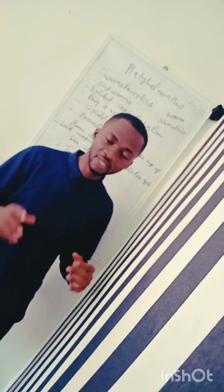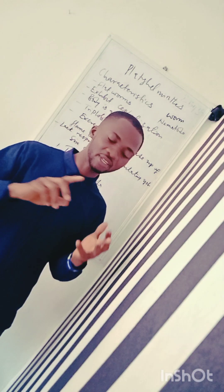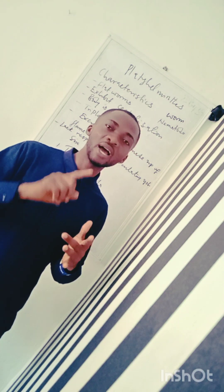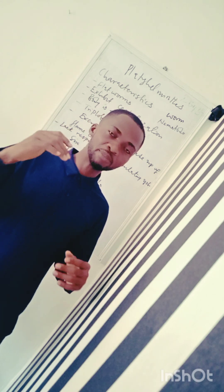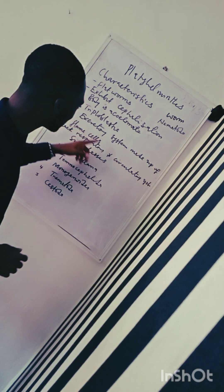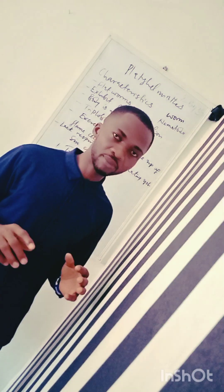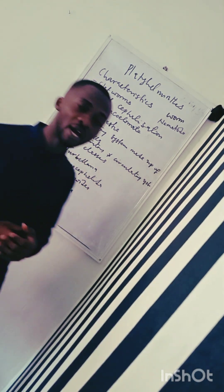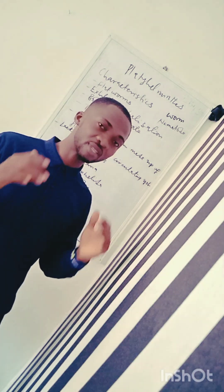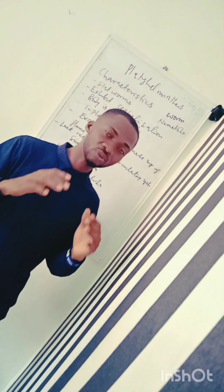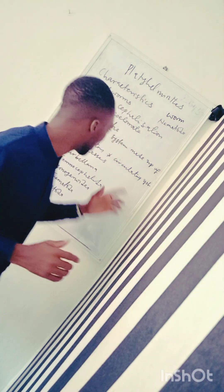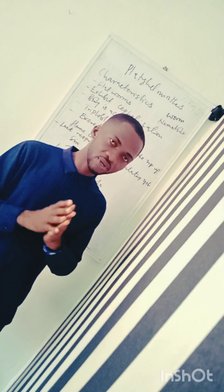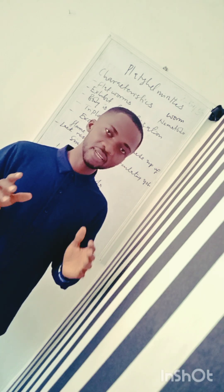They are also triploblastic, meaning they have three body layers: the ectoderm, the mesoderm, and the endoderm. They also have a special excretory system made of what we call flame cells. There is no circulatory system or respiratory system in members of Platyhelminthes. These are the key characteristics of this group of parasites.